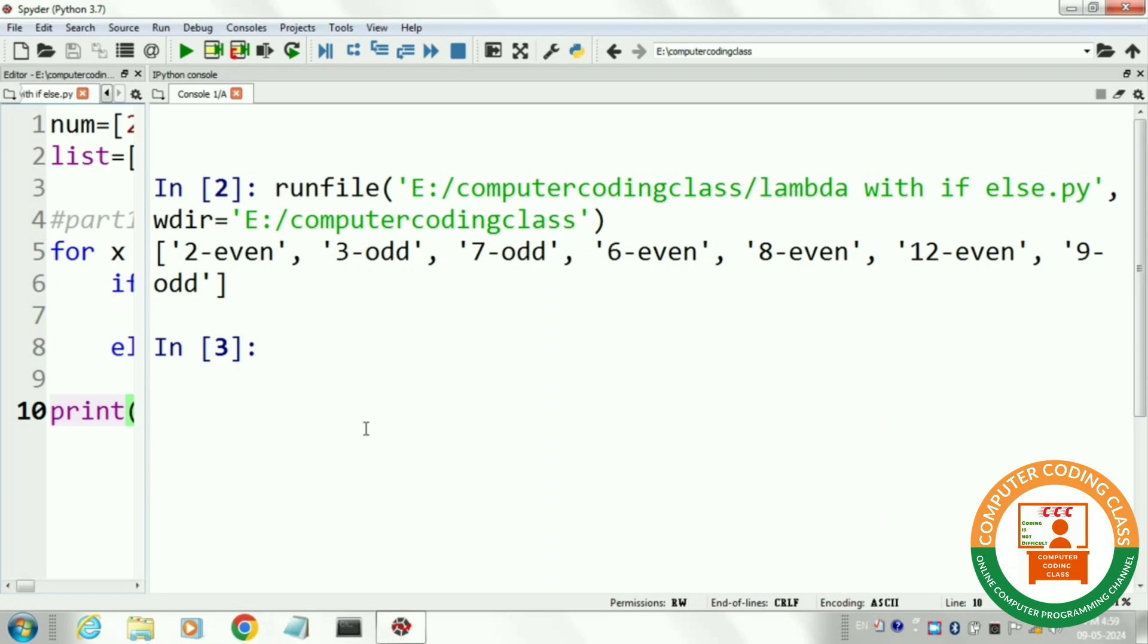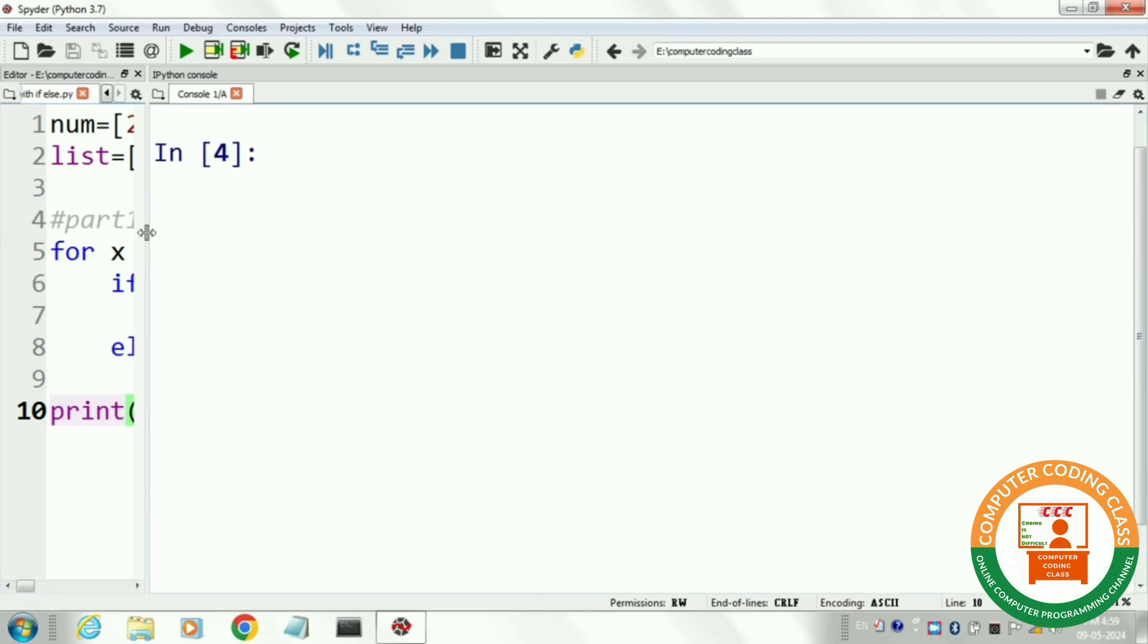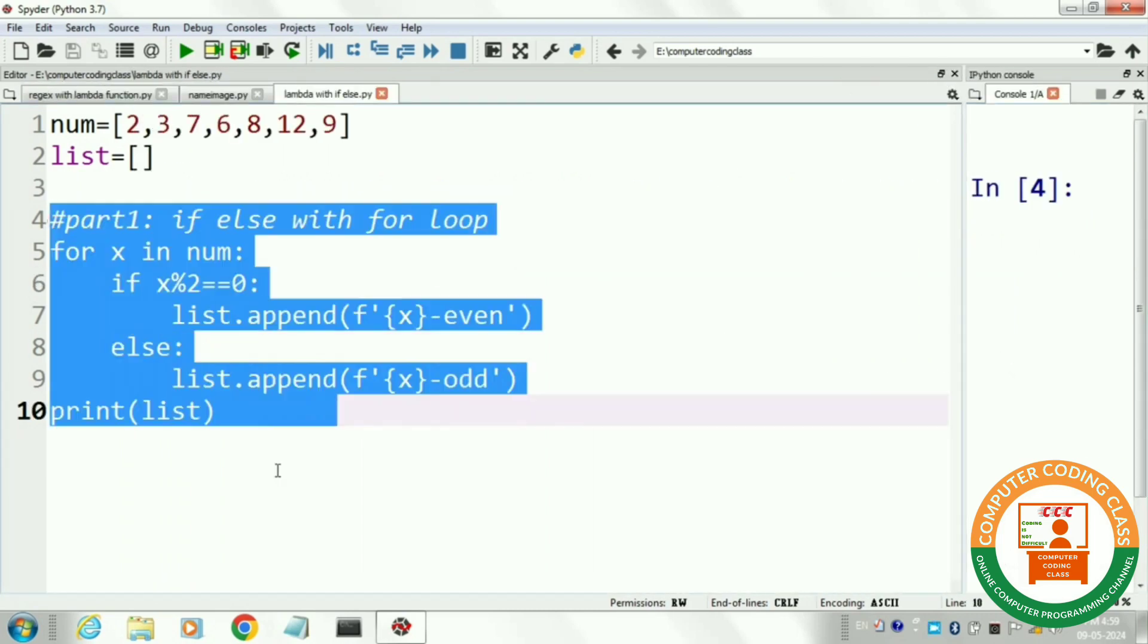In output window, it is showing a list of numbers where it denotes each and every number as in even or odd.